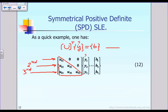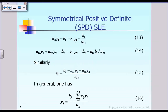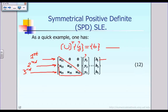In the more detailed notation, U-transpose will look like a lower triangular matrix. By looking at equation 12 you can see the intermediate vector y can be solved very simply. For example, the first equation of equation 12 says u11 times y1 plus 0 times y2 plus 0 times y3 equals b1. That is exactly equation 13: u11 times y1 equals b1, from which we solve for y1.